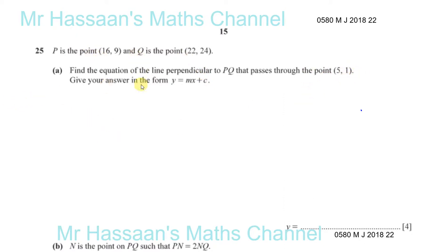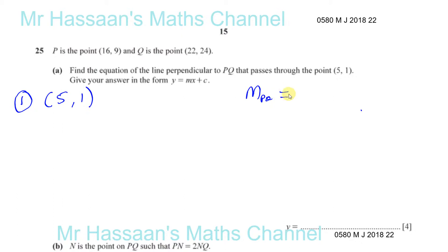We know two things about the line: first, it passes through the point (5, 1), which we can use to find the equation of the line. Second, it's perpendicular to PQ. So first, let's find the gradient of PQ. That's going to be the change in Y, which is 24 minus 9, over the change in X, which is 22 minus 16.